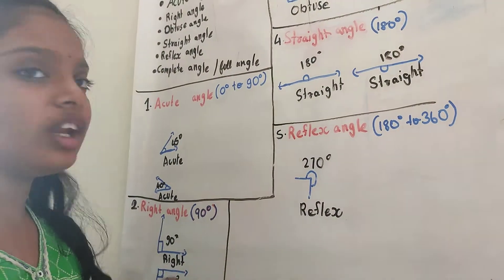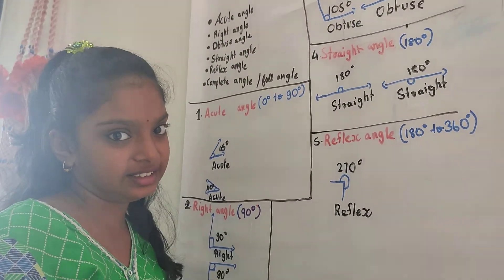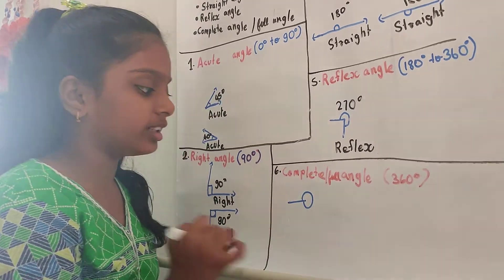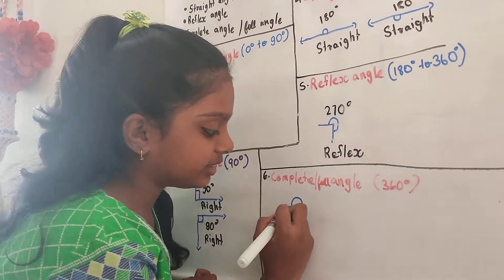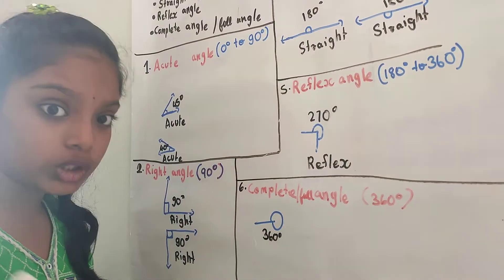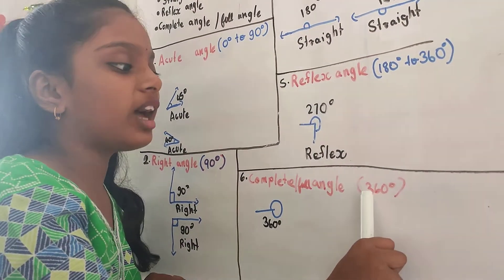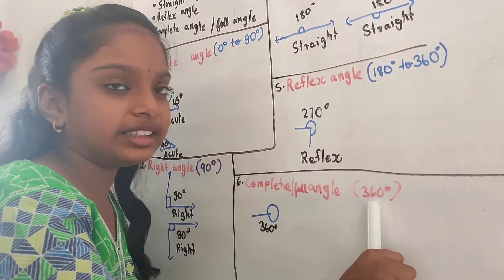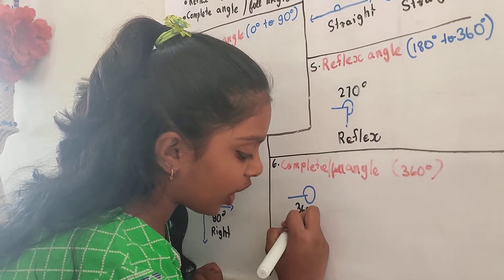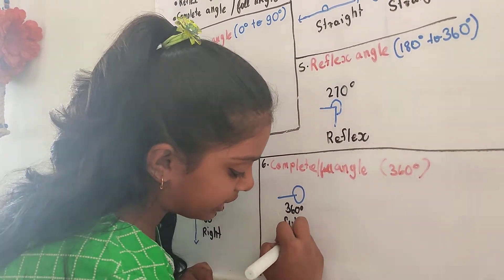Now, let us see the complete angle or the full angle. It has completed the whole circle and it is 360 degrees. The complete angle is also the angle which is 360 degrees. So, this is a full angle or complete angle.